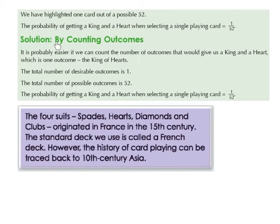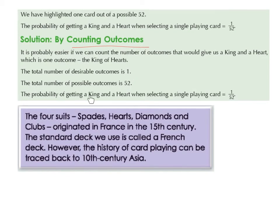And lastly, let's have a look by counting outcomes. It is probably easier if we can count the number of outcomes that would give us a king and a heart, which is one outcome — the king of hearts. The total number of desirable outcomes is 1, and the total number of possible outcomes is 52. So the probability of getting a king and a heart when selecting a single playing card is 1 over 52.